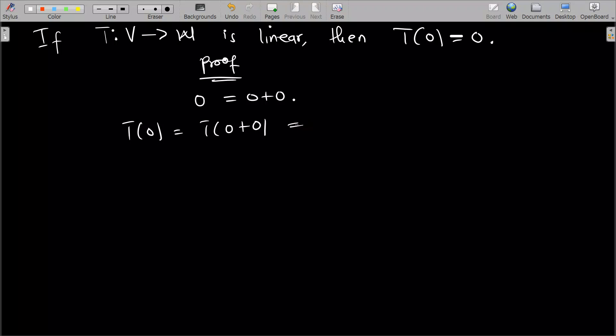And since T is linear, if T is linear, what it means is T(0 + 0) is equal to T(0). This side alone, I can just stop, I won't, all right, so this is it.